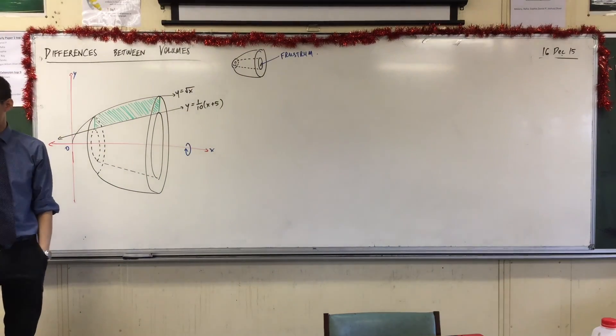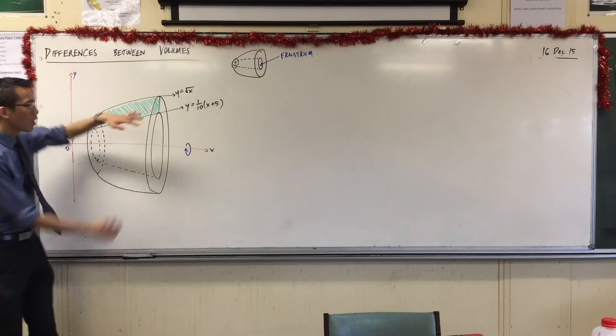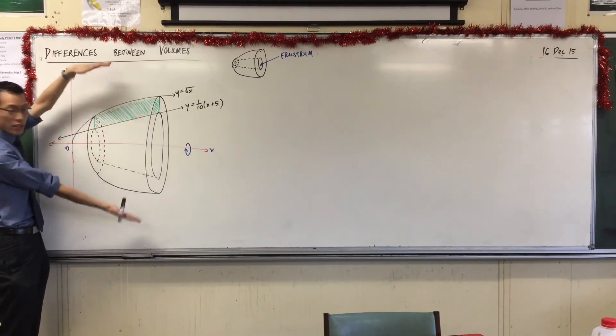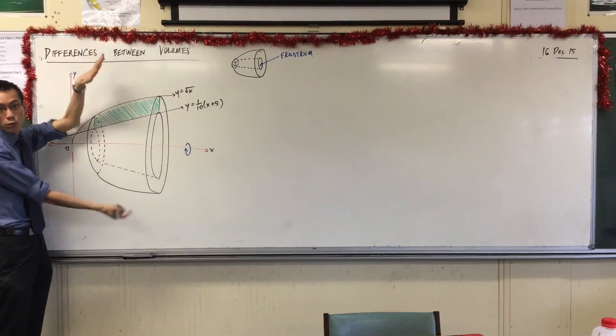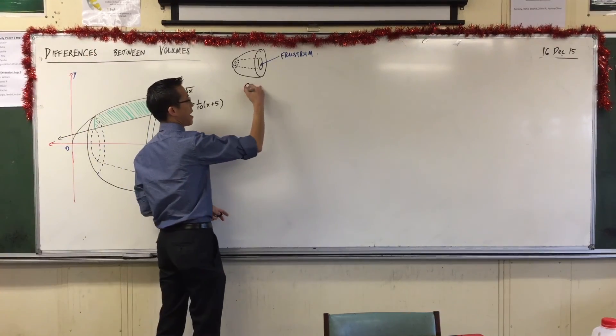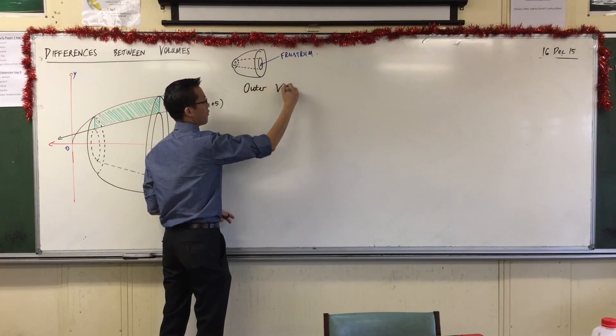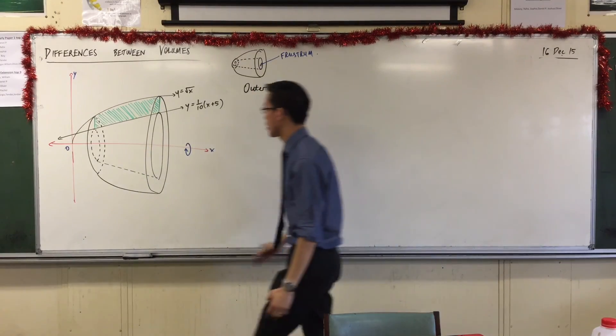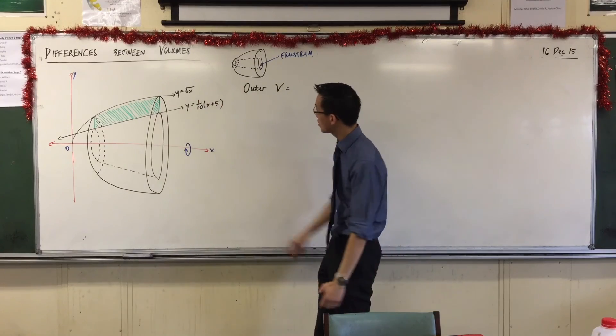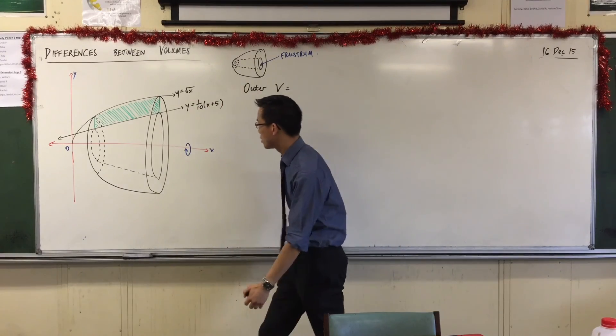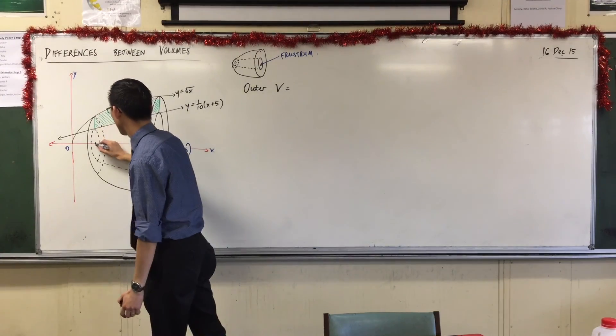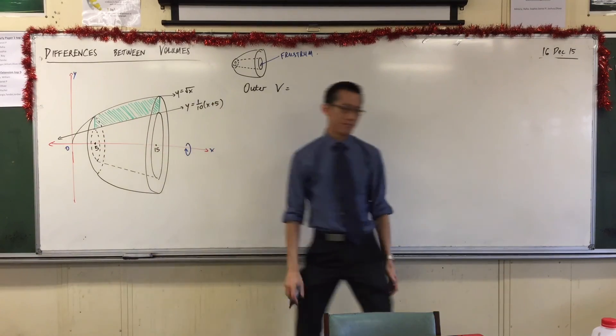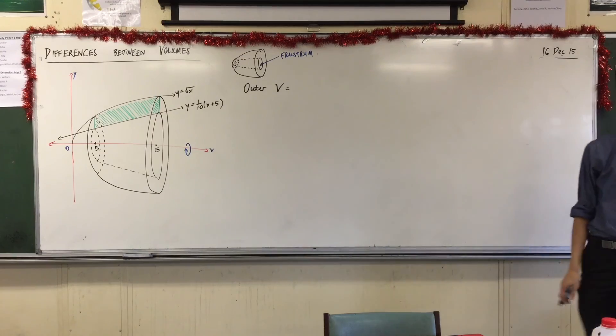So how do I determine this volume? I've got a big volume which I can work out from the parabola, and I call that, because it's the bigger one, I call it the outer volume. Now I haven't provided you boundaries yet, so just because of the functions that I've chosen, I think the values I wanted were, I'm going to call this one 5 and this one 15. My scale's not most fantastic, but hopefully the rest of the diagram makes up for that.